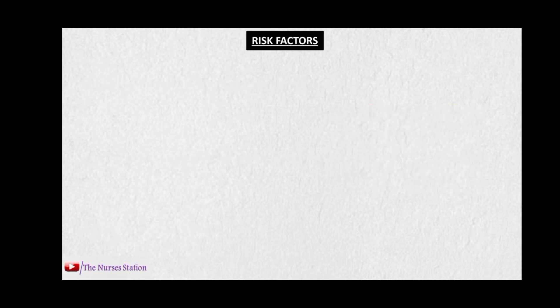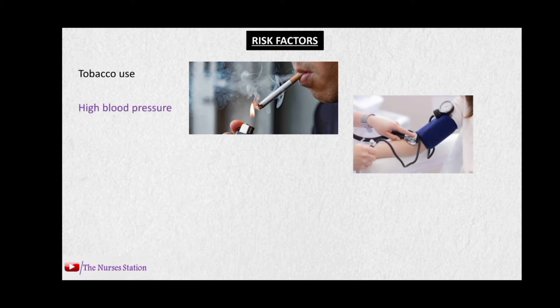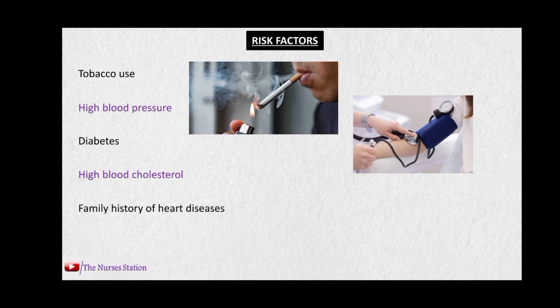There are various risk factors that put a person at high risk of getting myocardial infarction. Tobacco causes injury to the coronary arteries and other blood vessels, increasing the risk of MI. High blood pressure and diabetes also damage blood vessels throughout the body. High blood cholesterol can get deposited on the inner walls of arteries, blocking their lumen. Additional risk factors include family history of heart diseases and stress.